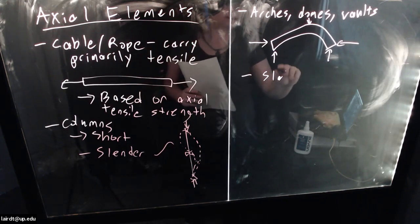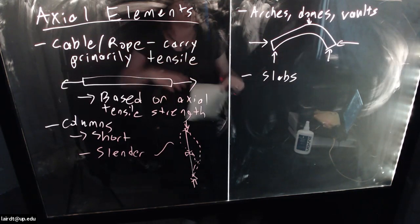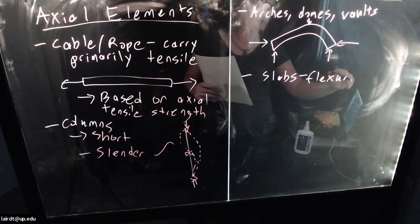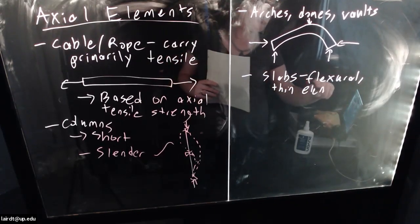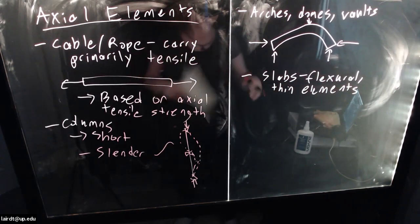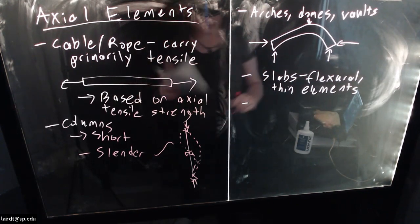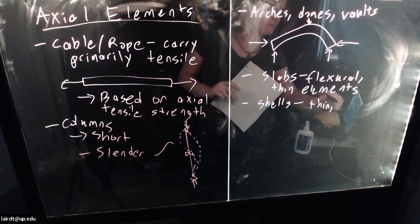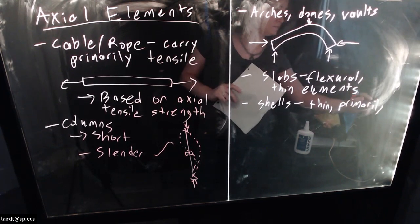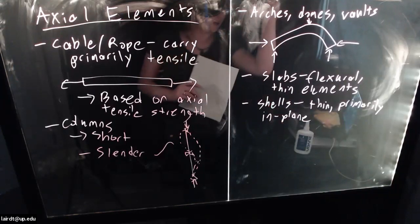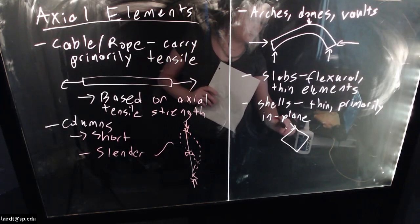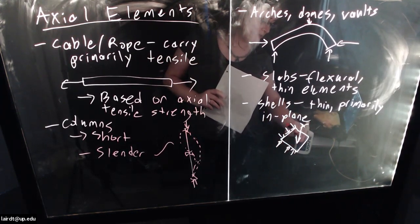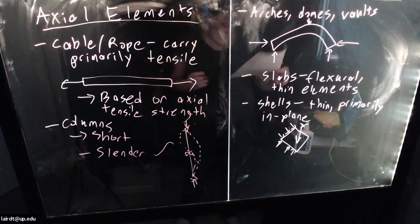Other elements include slabs — flat elements loaded primarily in bending, which are flexural elements. They do experience shear and some axial forces, but primarily carry flexural loading. You can also have shells, which are thin elements that carry primarily in-plane forces, experiencing very little out-of-plane forces — mostly in-plane forces with just a little bit of out-of-plane.